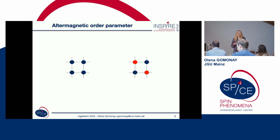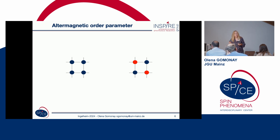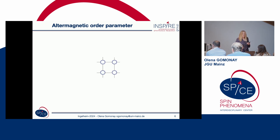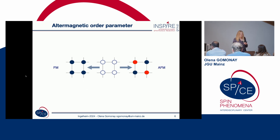If you are in a difficult situation, you look for the order parameter — that was my first supervisor's advice from Landau's school. We tried to look for the order parameter of this ultramagnetic transition. Instead of starting from ferromagnetic and antiferromagnetic ordered phases, we started from the paramagnetic phase where there is no magnetic ordering at all. From there you can obtain ferromagnetic and antiferromagnetic phases and introduce the corresponding ferromagnetic and staggered magnetization.